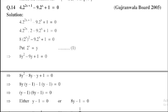2^(2x) can also be written in the form of (2^x)^2 minus 9·2^x plus 1 equals 0.